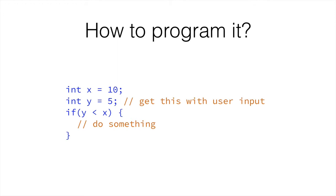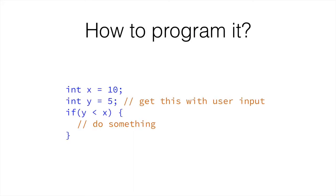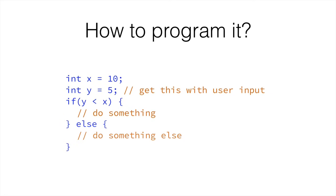We can do something if something is true, or we can do something else if that is not true. Going back to our code, we can append something at the end that will say: if this comparison failed, we do something else. The keyword for this is the else keyword. So, if y is less than x, we'd do one thing; in a new set of curly braces, we'd do something else.